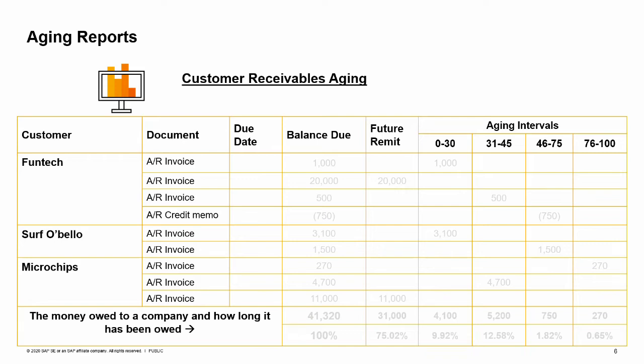A similar aging report with the same structure exists for vendors. When Maria wants to see open AP invoices for vendors, she generates the vendor liabilities aging report. After generating the aging report, either for customers or for vendors, you can email the respective aging data to the relevant business partners.